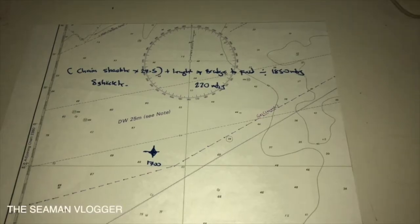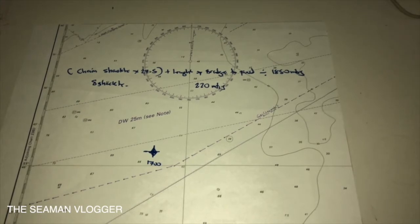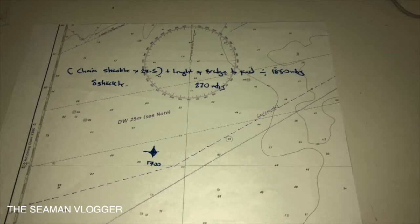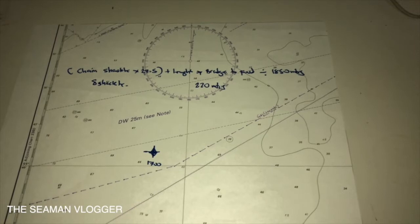Okay, so now we are going to compute how to make the radius of swing of the vessel during at anchor. Actually, there are plenty of calculations for this radius of swing. But for my calculations, just simple as 1, 2, 3. Okay, so first, this is the formula.